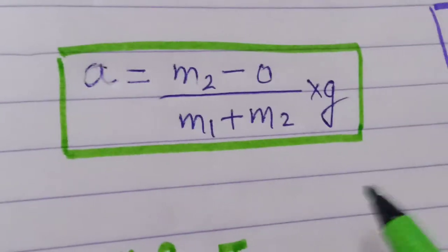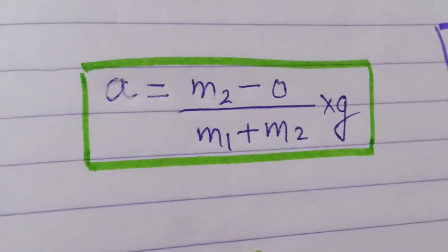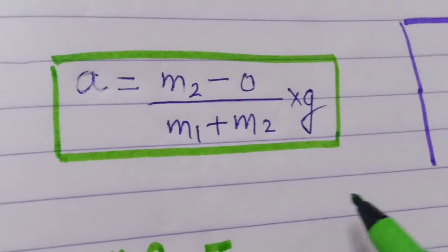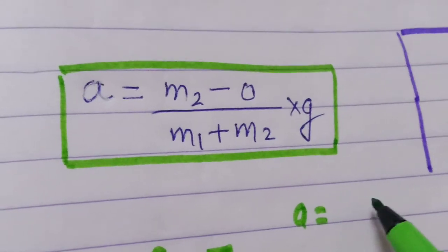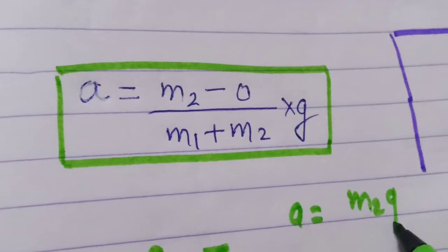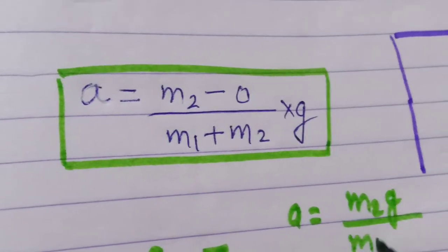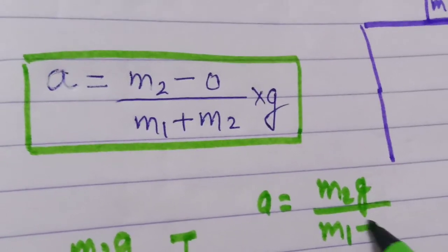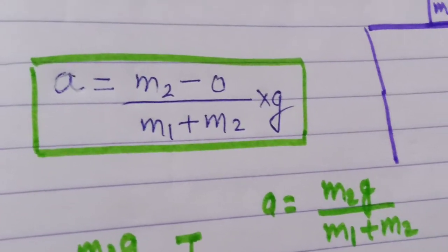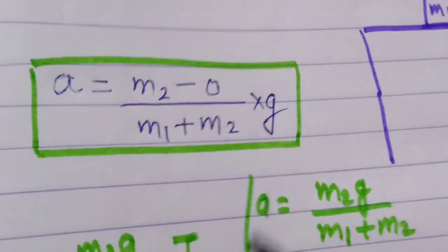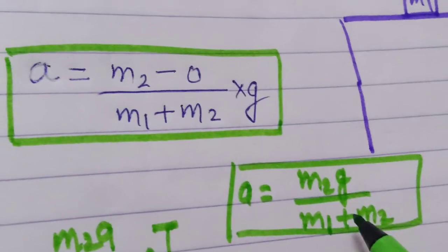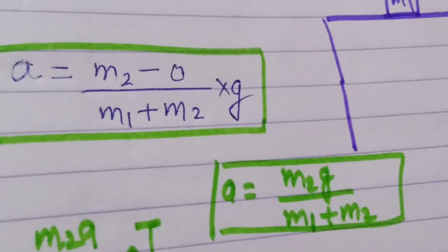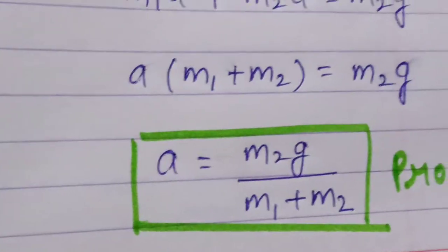We can write it like this: a is equal to m2 g upon m1 plus m2. And we prove this by the explanation also. Look at this.